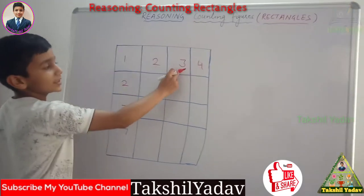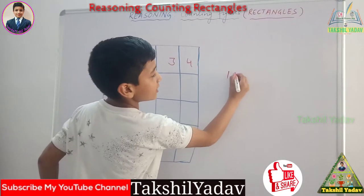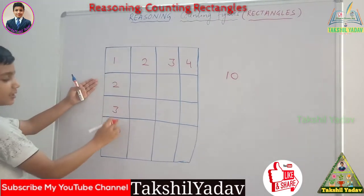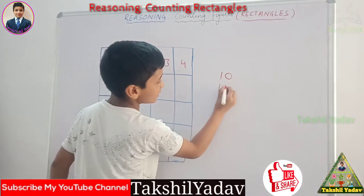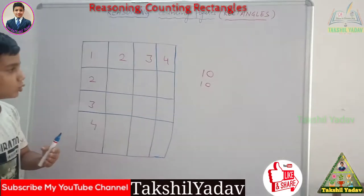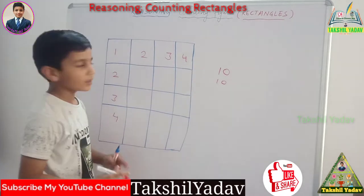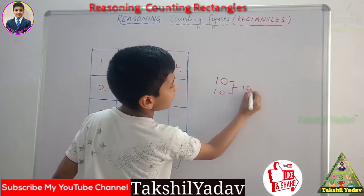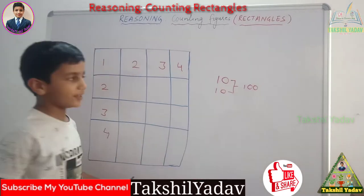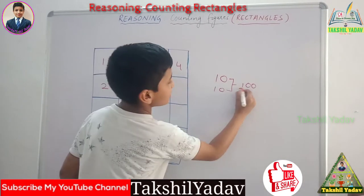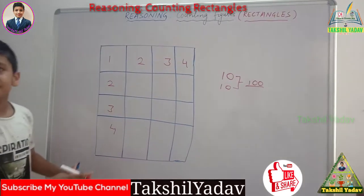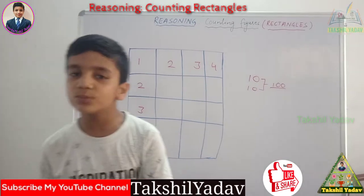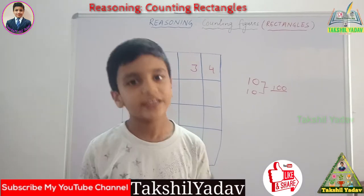1 plus 2 plus 3 plus 4 gives us 10 for the columns. And here in the rows, 1 plus 2 plus 3 plus 4 again gives us 10. Now we multiply these both. When we multiply 10 by 10, we get 100. Thus there are 100 rectangles in this figure. This was the first type, where columns and rows in a figure are equal.